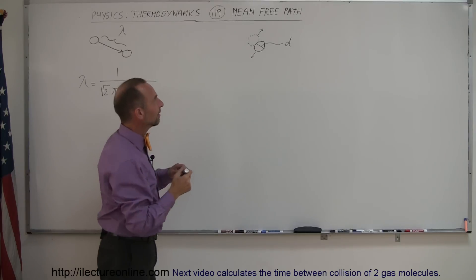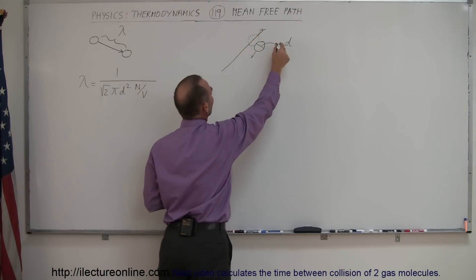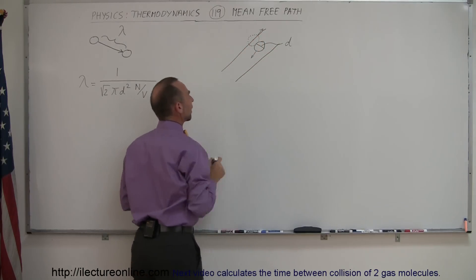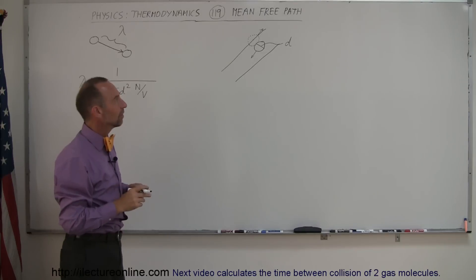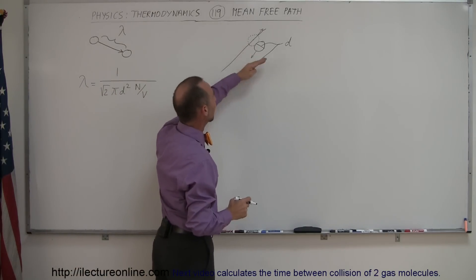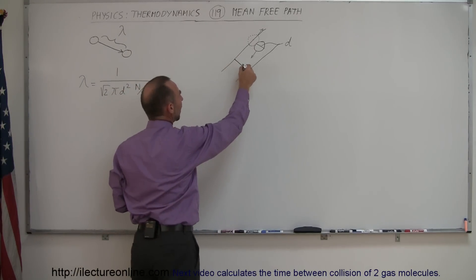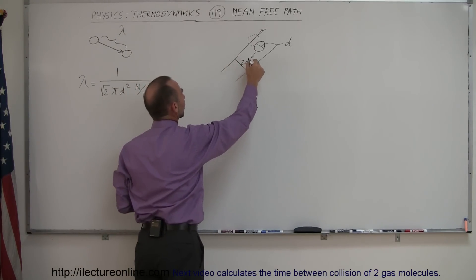The center of mass of the second molecule cannot get any closer than this line right here and on the other side it cannot get any closer than this line right there. So what that means is that the diameter of the path that a molecule has to travel without colliding with another molecule is actually twice the diameter of the molecule.